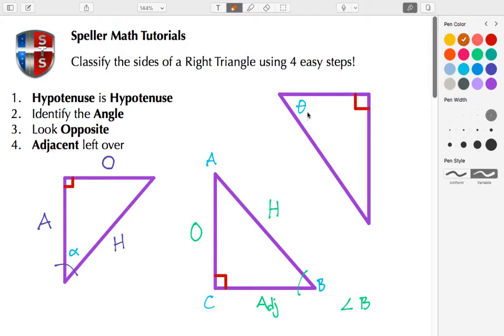The last example, we have angle theta. First, the hypotenuse is the hypotenuse. We look at the right angle symbol, it points opposite here, so this is H for hypotenuse. The second step is to identify the angle. The angle is identified for us, that's angle theta. This is the eyeball or flashlight.